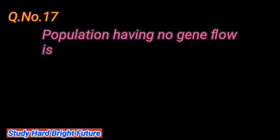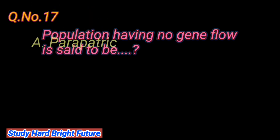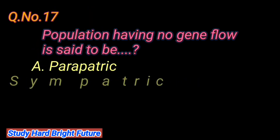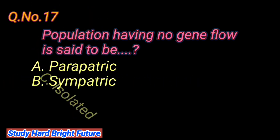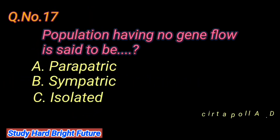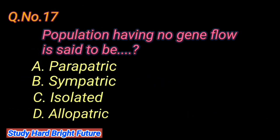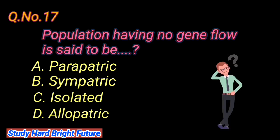Question number 17: A population having no gene flow is said to be. A. Peripetric, B. Sympatric, C. Isolated, D. Allopatric.